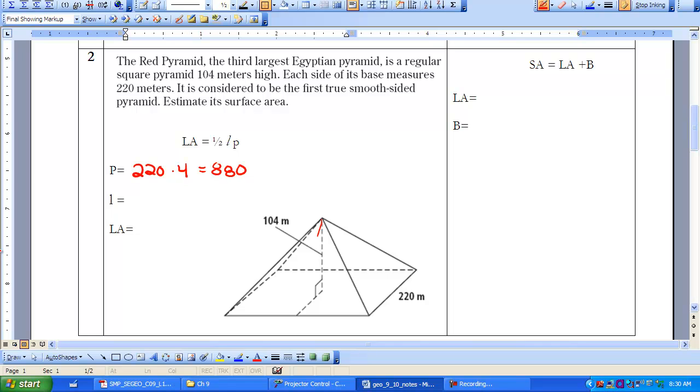Slant height, though, is going to be a little bit more difficult. We know that we have a right triangle in here, so we can use Pythagorean theorem. Now, the side of my base here is 220, and this height is dropping to the center of my square. So I'm going from the center to the outside. So that distance is 110, 220 divided by 2. So we need to find the hypotenuse so we can get our slant height. We can do the square root and find 110 squared plus 104 squared. I'm going to make an approximation here, so I'm going to have 151.38.